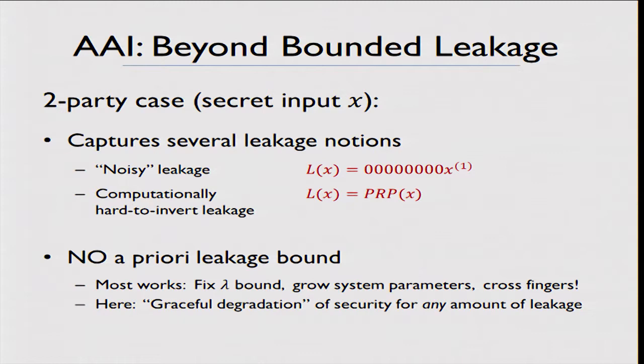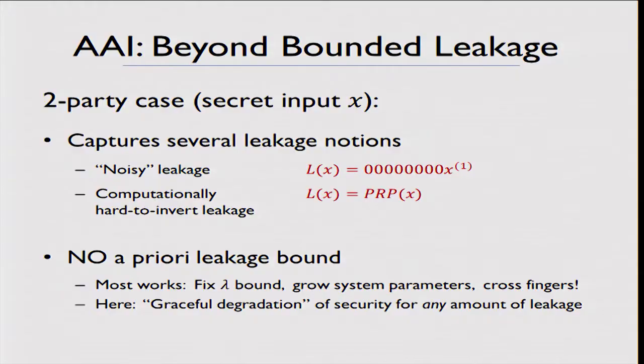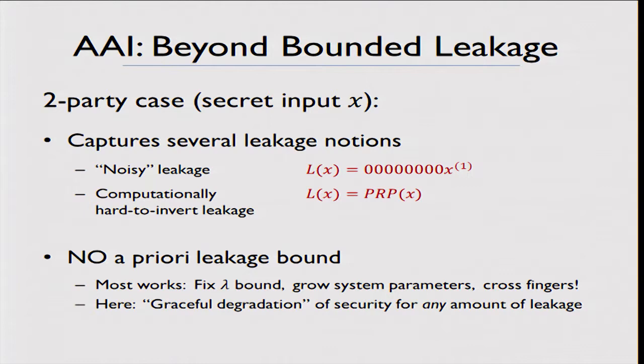Our protocol has no a priori leakage bound. In leakage-resilient cryptography it is common to first choose a bound lambda — number of bits or amount of entropy to protect against — grow the scheme's parameters based on that, and then hope that nobody leaks more than lambda, since security would break down beyond that. In contrast, our protocol achieves graceful degradation of security: you don't need to fix a leakage threshold beforehand; the more leakage that occurs, the more security degrades, but it degrades gracefully.